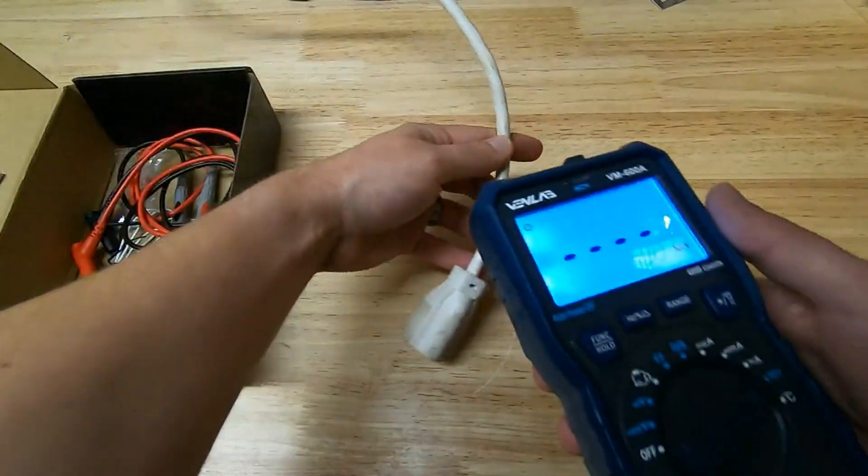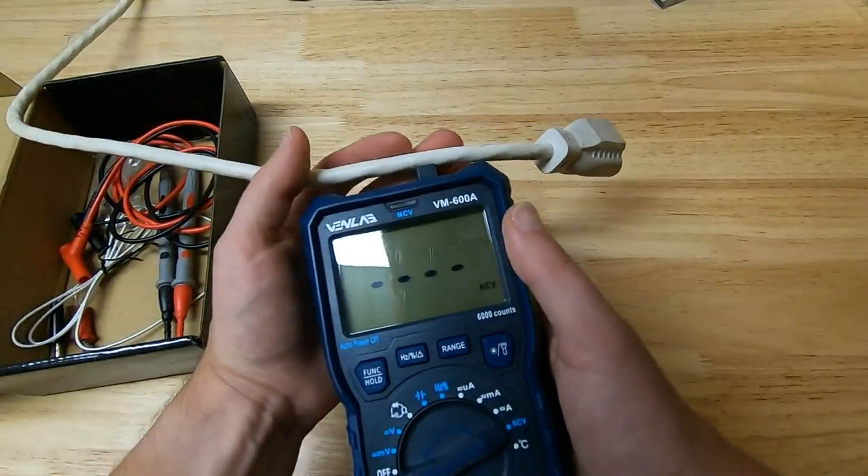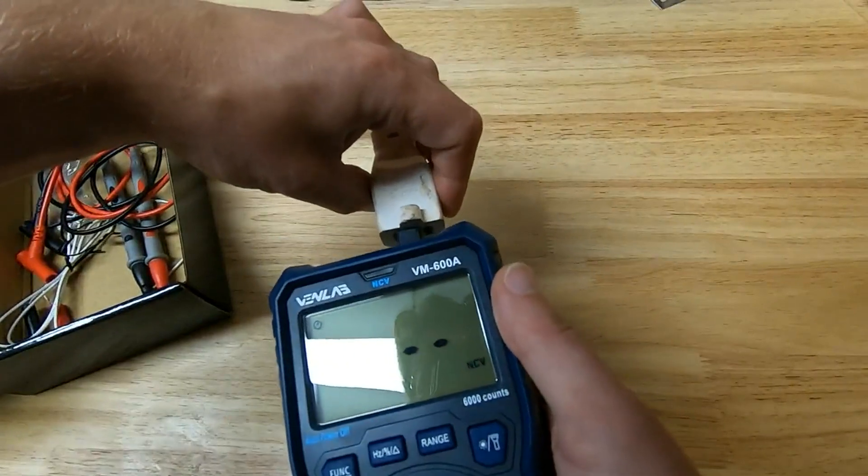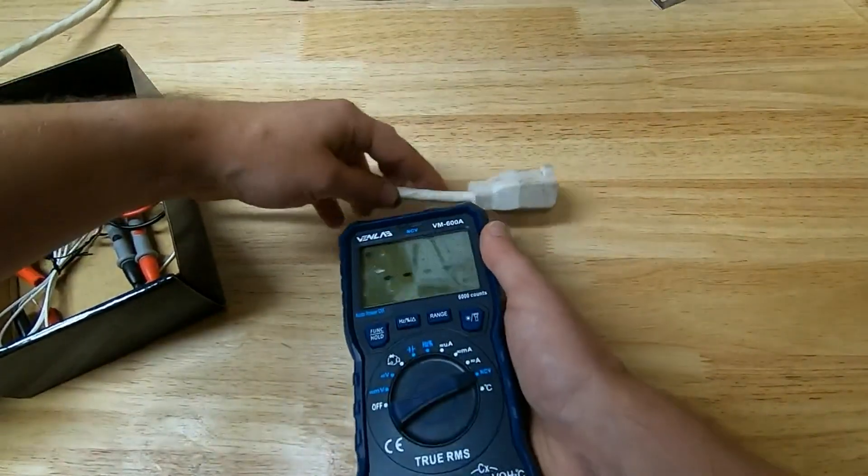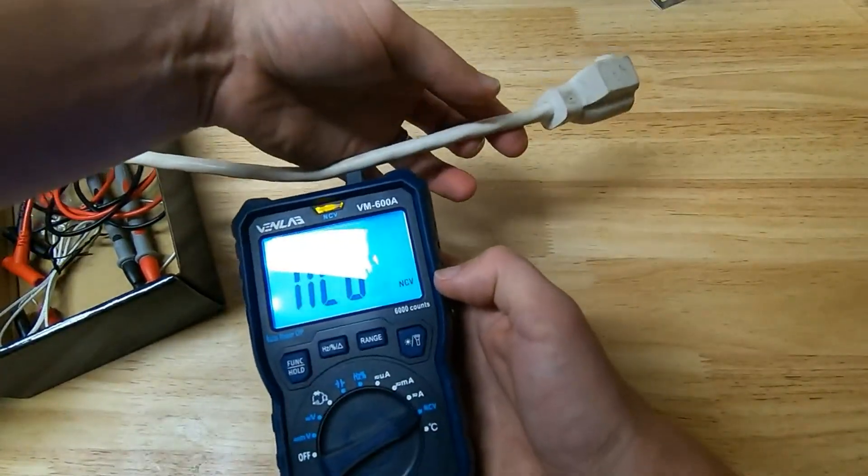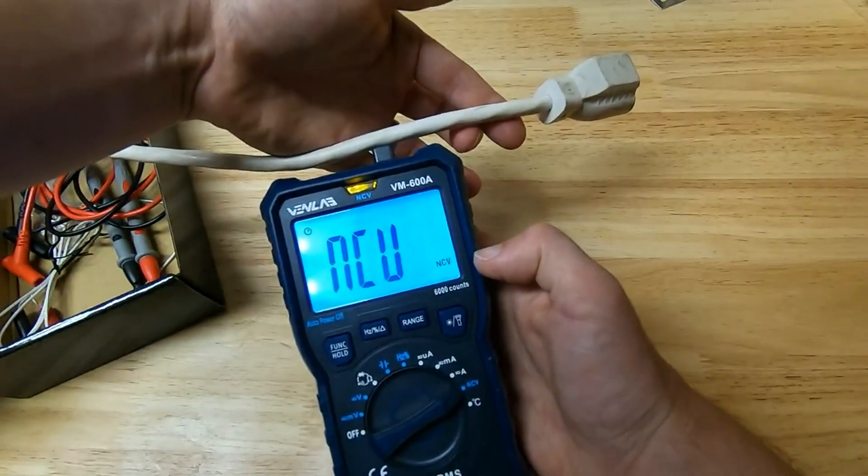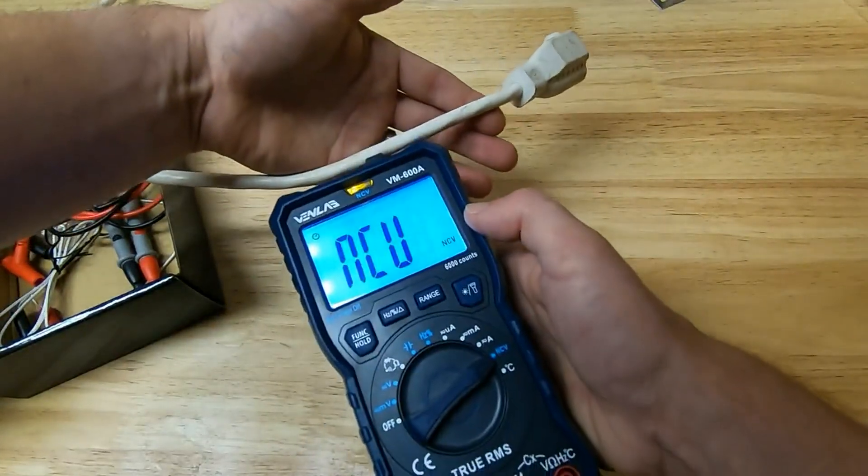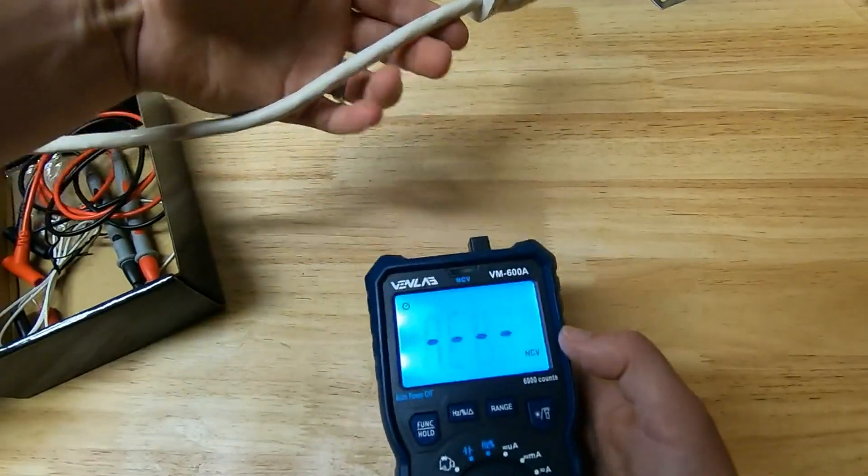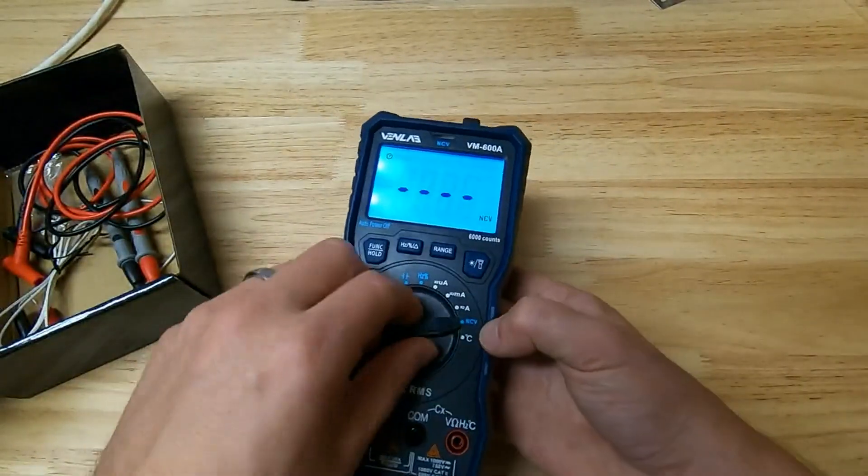If I just grab an extension cord over here, that happens to be live. I should get, there's no current passing through it, but it should show up here. There we go. It's beeping to warn me that it's live.